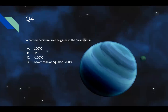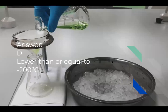Question four: what temperature are the gases in the gas giants? Arnav, you are correct. Naveen, please check your answer again. Ditya, correct. Shittij, correct. Nishka, correct. Time's up. The answer is lower than or equal to negative 200 degrees Celsius. This is the temperature at which most gases turn into liquids.